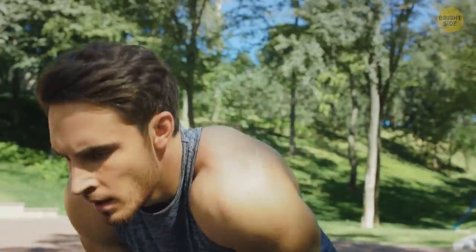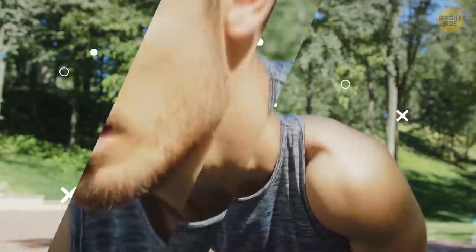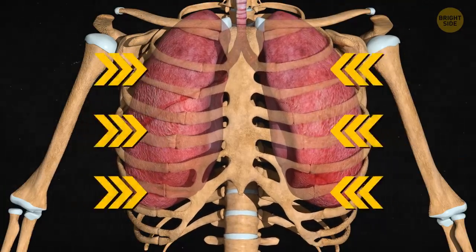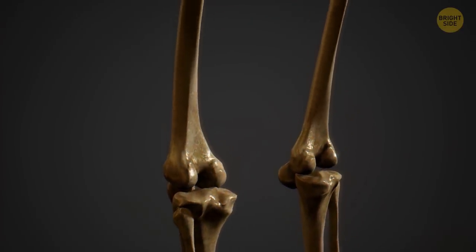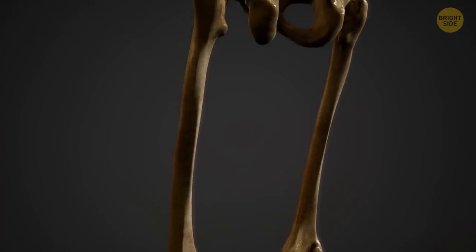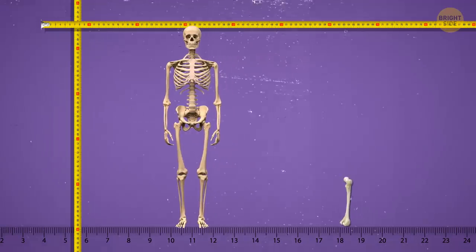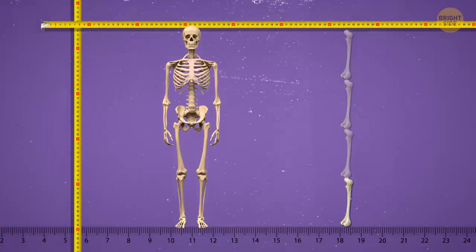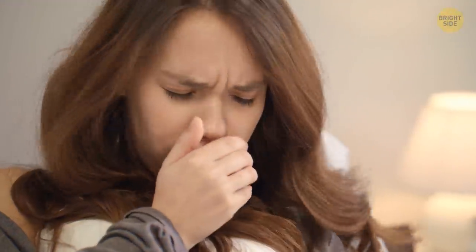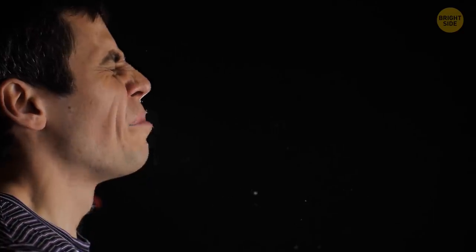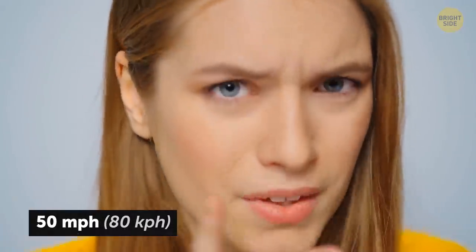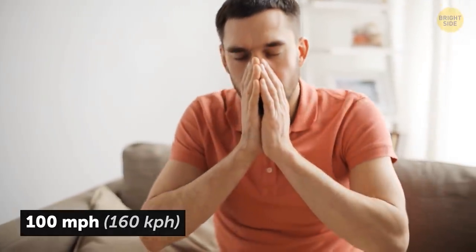Our ribs move every time we take a breath, which means more than 5 million times a year. The femur, better known as the thigh bone, is the longest one we have in our body, and it is around a quarter of the total height. When you sneeze or cough, your body only wants to do one thing: get rid of whatever is stuck in there bugging you. A cough travels up to 50 miles per hour, while the sneeze goes twice as fast and reaches up to 100 miles per hour.